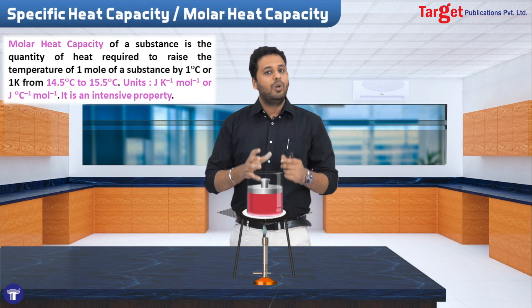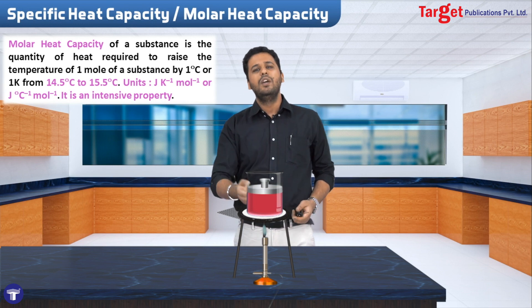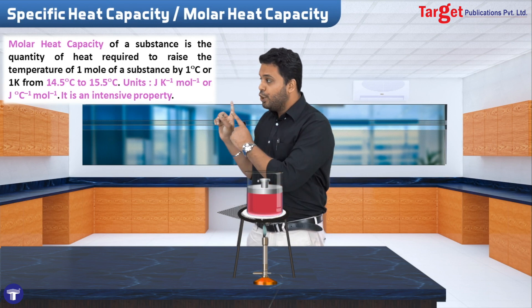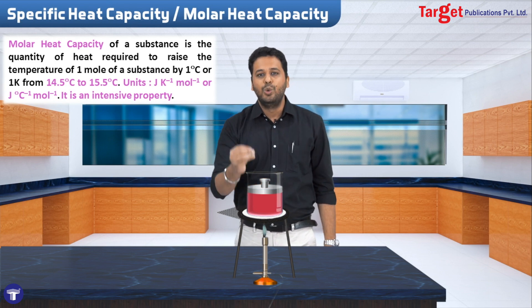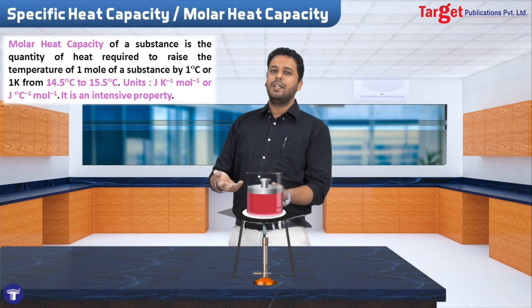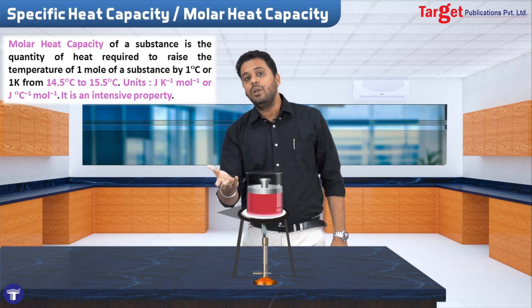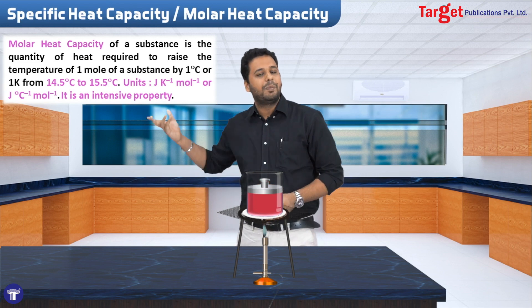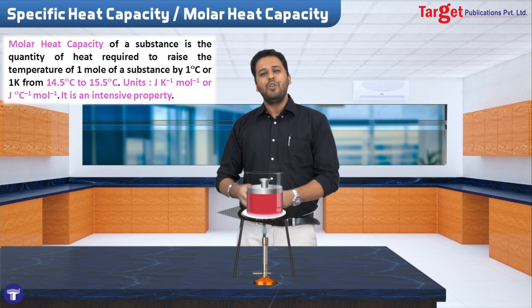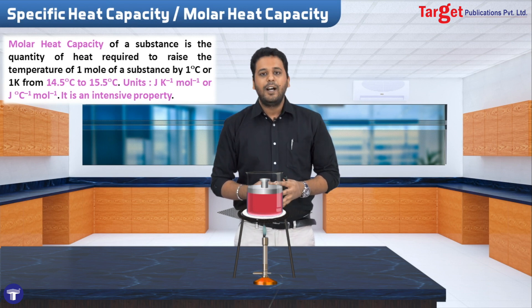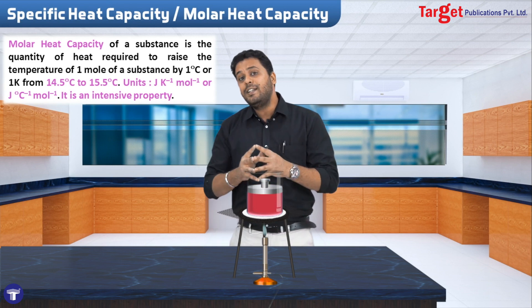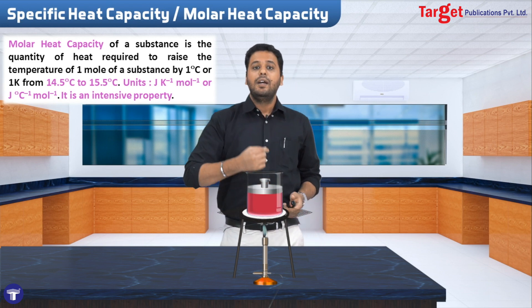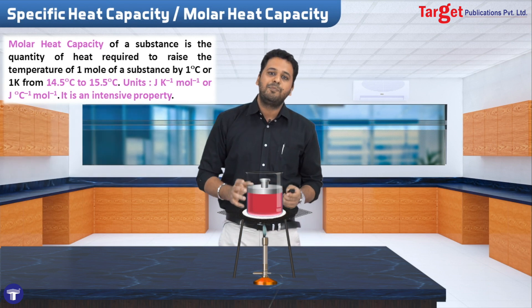The unit of molar heat capacity is joule per mole per Kelvin, or equivalently joule per mole per degree Celsius. Molar heat capacity is an intensive property because it is defined only for one mole. So heat capacity, when defined for one mole of substance, is molar heat capacity. And when defined for one gram of substance, it becomes specific heat capacity.